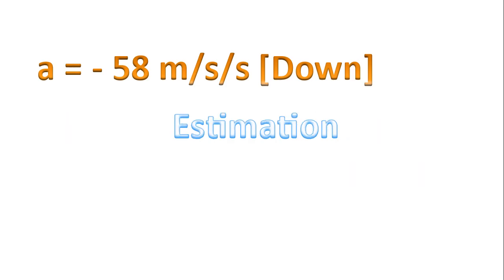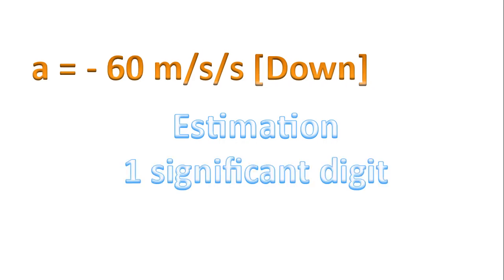So at best, when we say the acceleration is negative 58 meters per second, per second, it's an estimation. Because it's an estimation, we can really only have one significant digit. The other reason why we can only really have one significant digit is because we estimated his velocity just prior to activating his rockets to be 200 kilometers per hour.